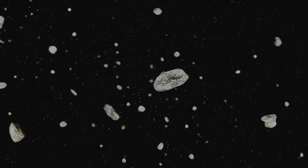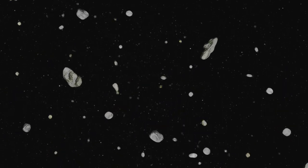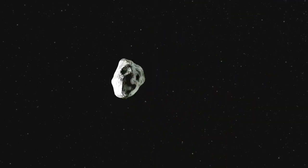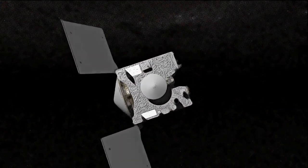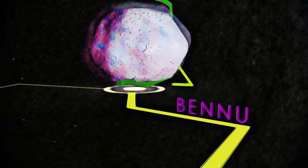As leftover debris from the solar system formation process that began over 4 billion years ago, asteroids can teach us a lot about the history of the Sun and planets. This is why OSIRIS-REx plans on collecting a sample of Bennu for us to analyze.